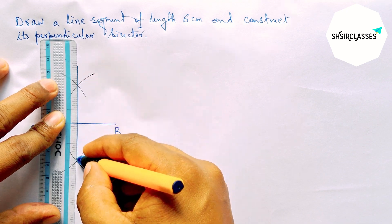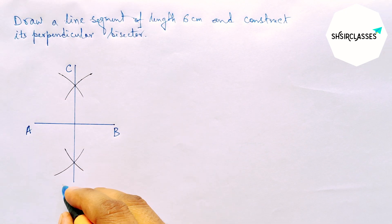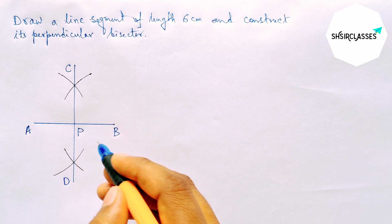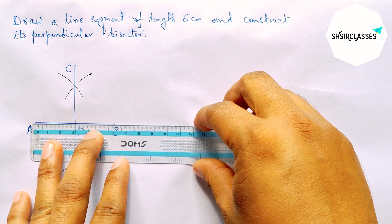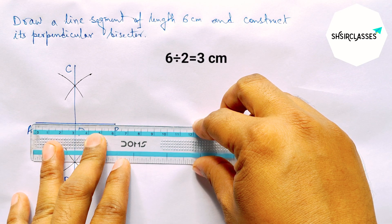And this is the required perpendicular to the line AB. So labeling here C and here D where the lines meet at a point. Next, checking this whether it is bisecting perfectly or not.